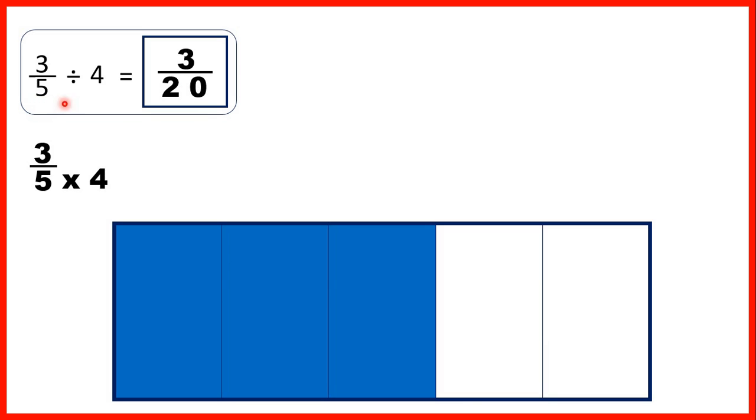Now for 3 fifths divided by 4, we can show 3 fifths. And remember, dividing by 4 is the same as finding a quarter of something.